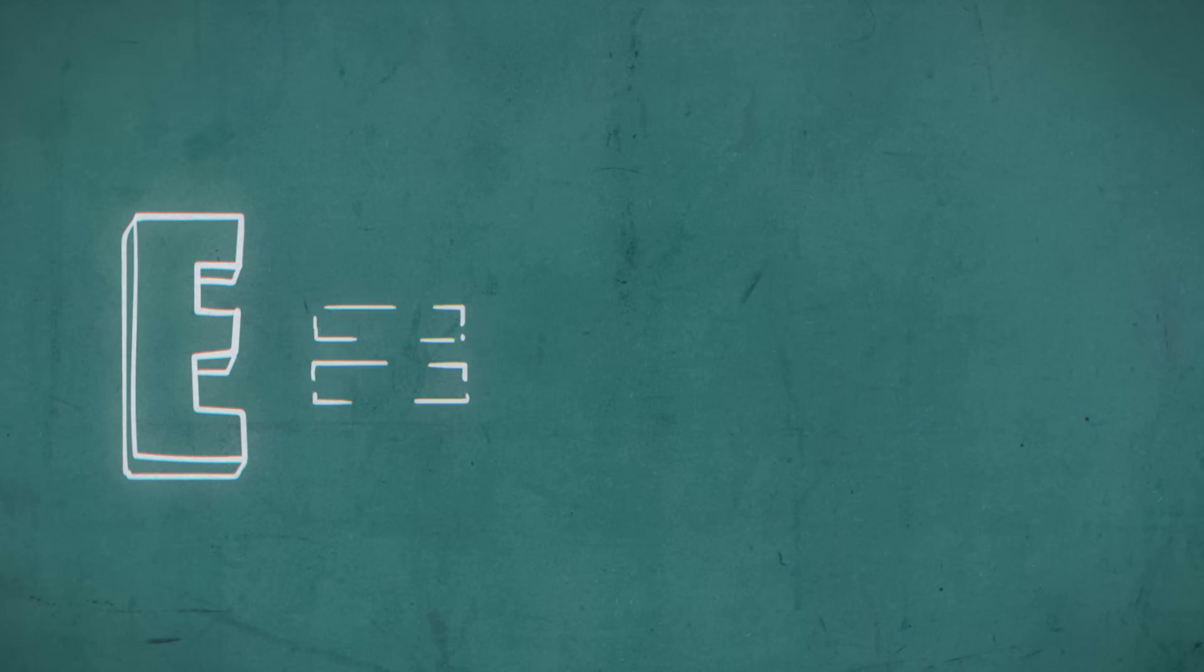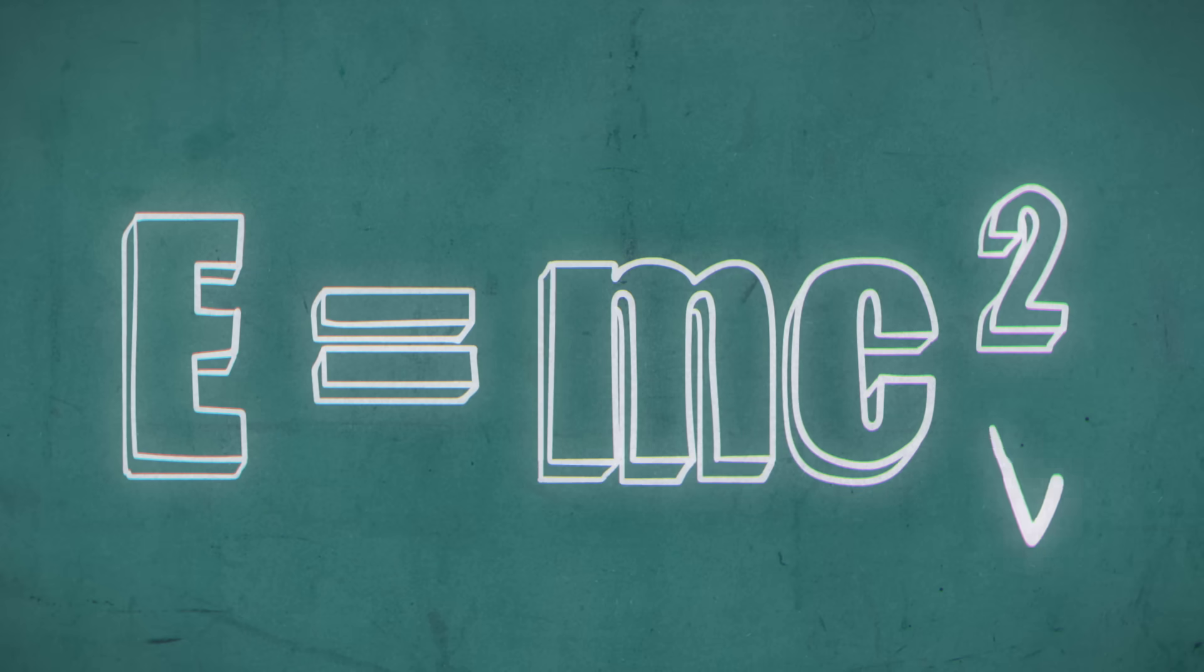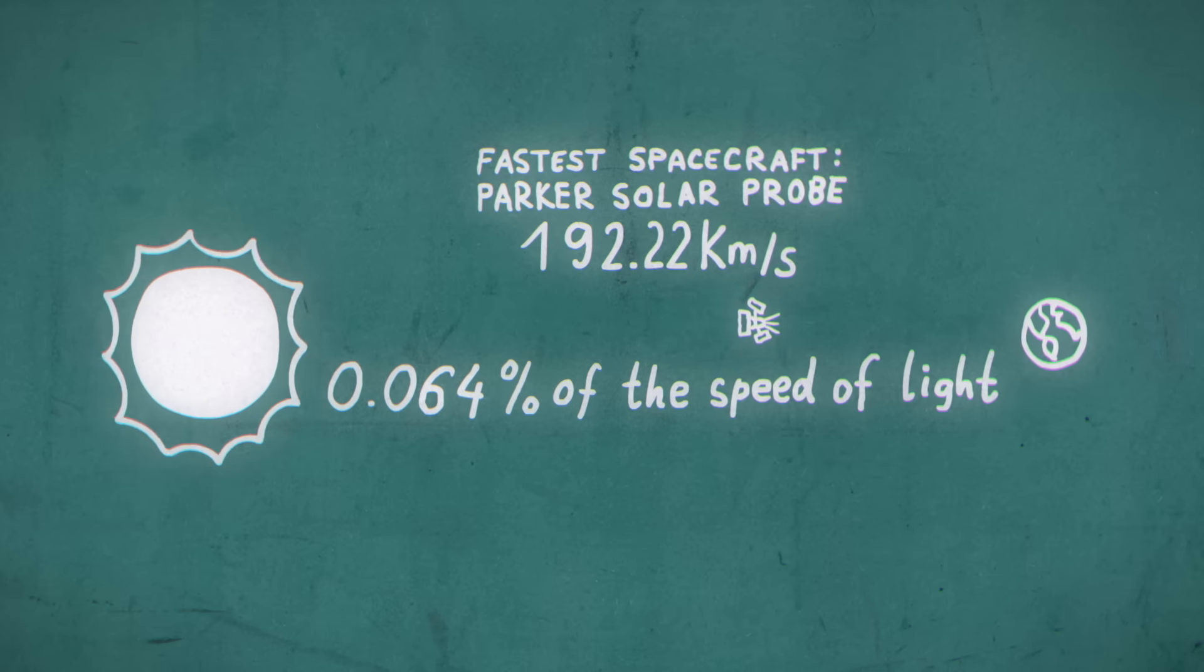Despite these loopholes, the major takeaway of E equals MC squared remains true. As far as we know, we still can't travel faster than light in a vacuum.